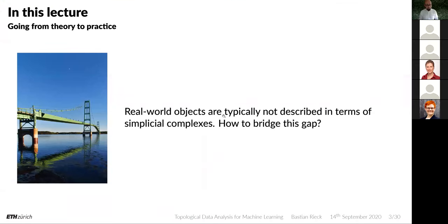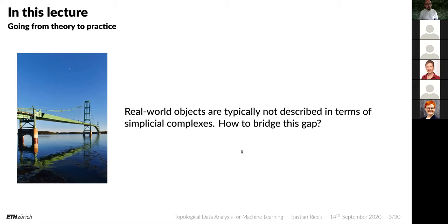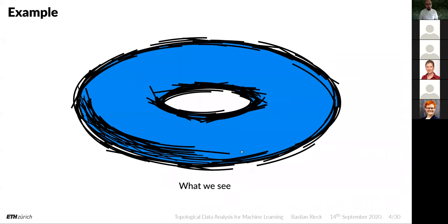We're going to bridge this gap in this lecture. We're trying to figure out how real world objects work and how we can describe them in terms of simplicial complexes. Here's an example — this is what we typically get when we work with real world data. What we see as humans is this torus. We want to understand why this is a torus, or why this point cloud is likely to have been sampled from a torus. But this is really hard to say.